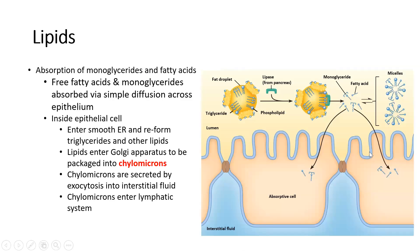Let's talk about how fats are actually absorbed across the epithelial membrane. Only fatty acids and monoglycerides can be diffused across the epithelium, so we have to get triglycerides broken down to either of these two components. Because our phospholipid bilayer is made of fats, these fats can diffuse right through the apical surface of these cells. When they enter the cell, they're going to go to the smooth endoplasmic reticulum, which is one of the organelles inside the cell.